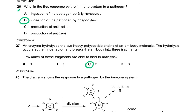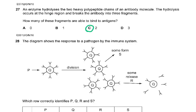Question 26: what is the first response of the immune system to a pathogen? Ingestion of the pathogen by phagocytes is the first response. The antibody story involving B lymphocytes comes much later on.